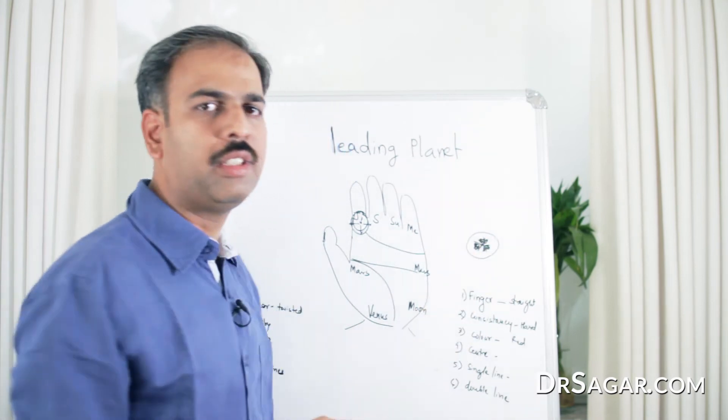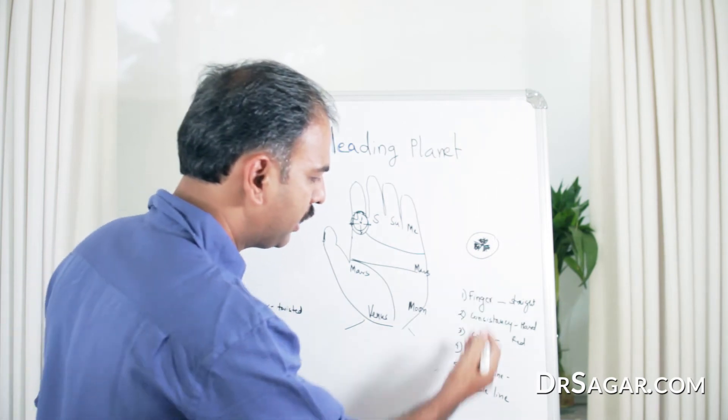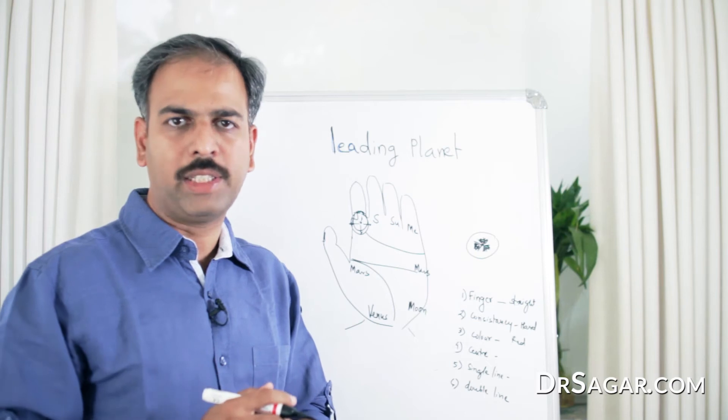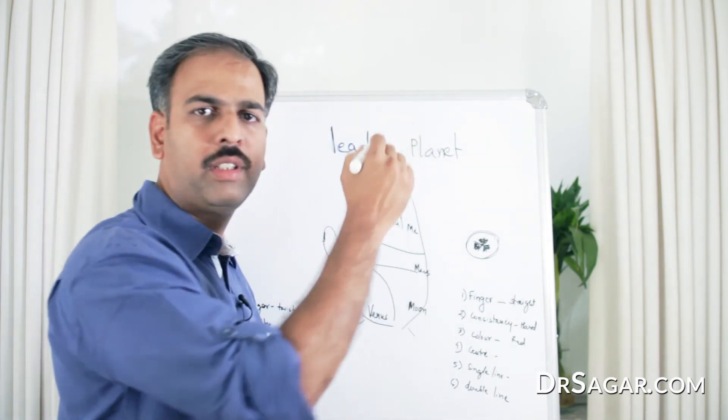So, with this sign, you have to practice to find out the center, but with these six signs, you can know the main leading planet in your hand, and with this practice, you can confirm it.